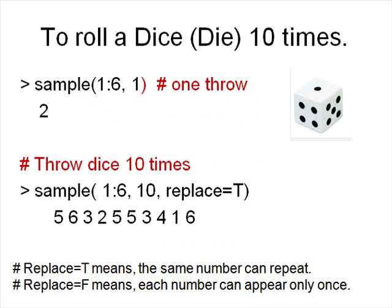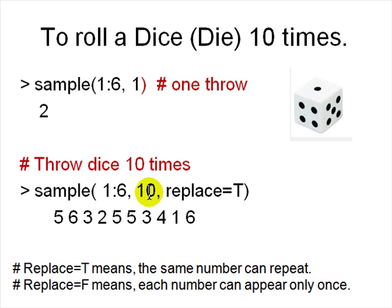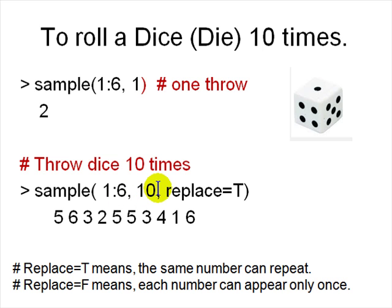To roll a dice ten times, use the 'sample()' function: 'sample(1:6, 1)' gives one roll. 'sample(1:6, 10, replace=TRUE)' throws it ten times. The 'replace=TRUE' argument means after picking a number, put it back in the set of 1 to 6 so numbers can repeat. Without replacement, 'sample(1:6, 6)' gives a permutation of 1 to 6.